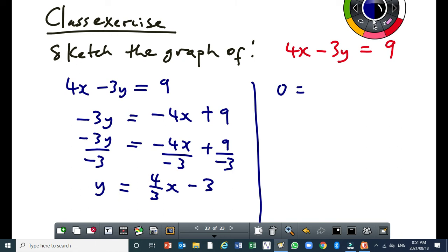By taking the 4x to the right and dividing each term by minus 3, you get the equation of y equals 4 over 3x minus 3.